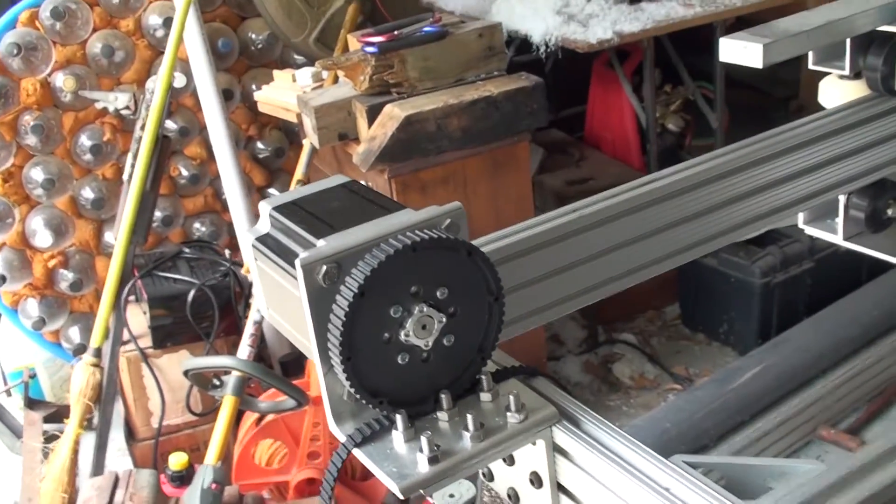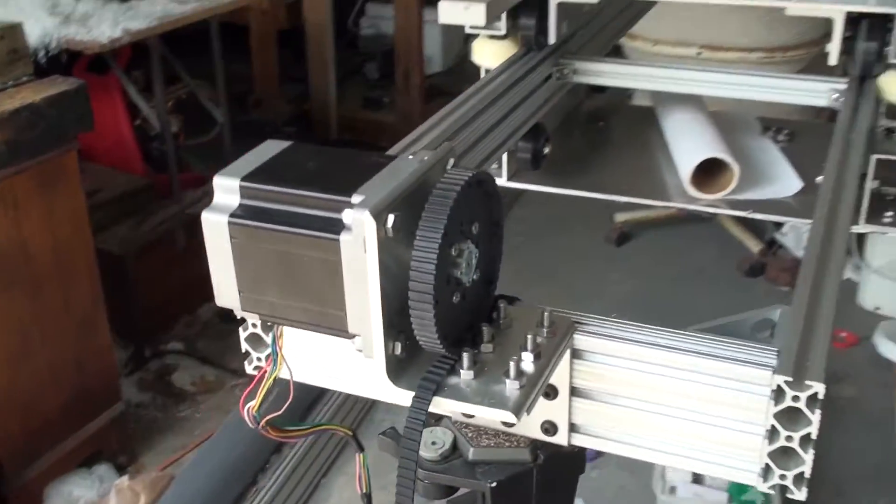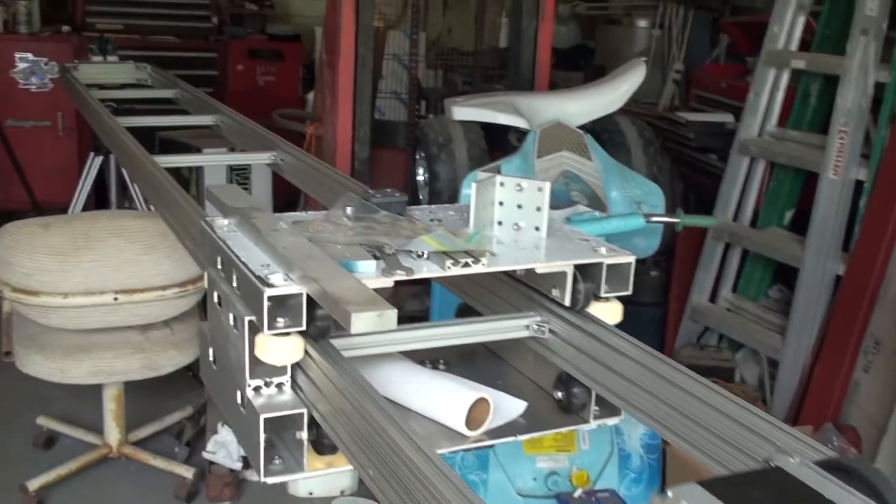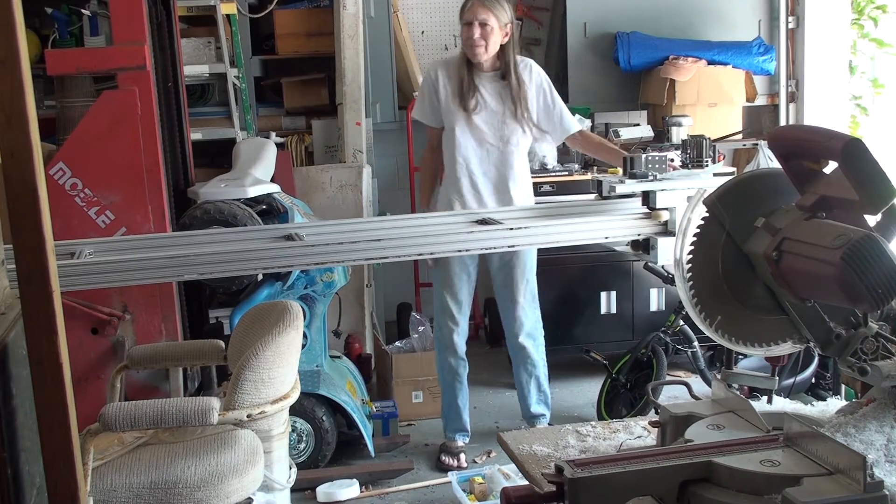This is the motorized pulley with a NEMA 34 motor on it. Like I said, the belt goes in a big loop and moves the trolley.